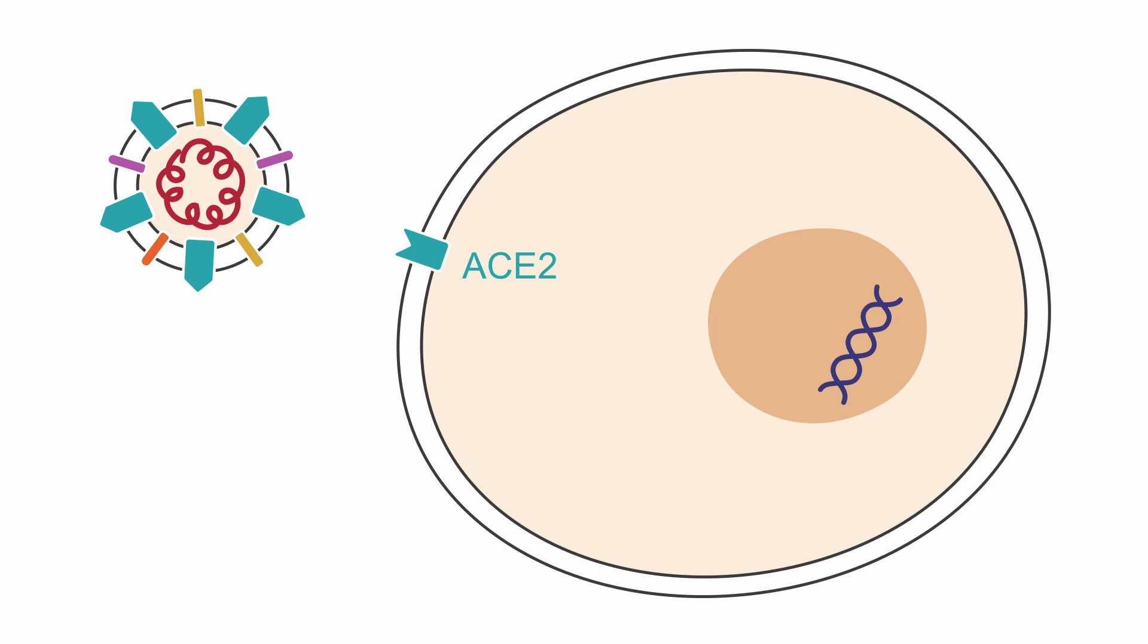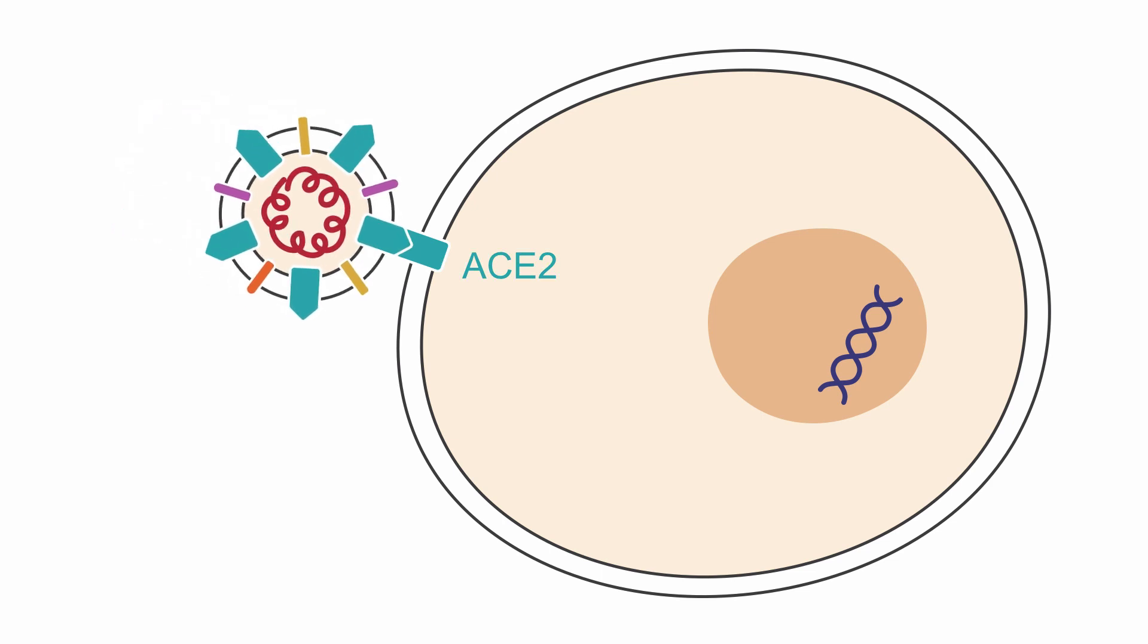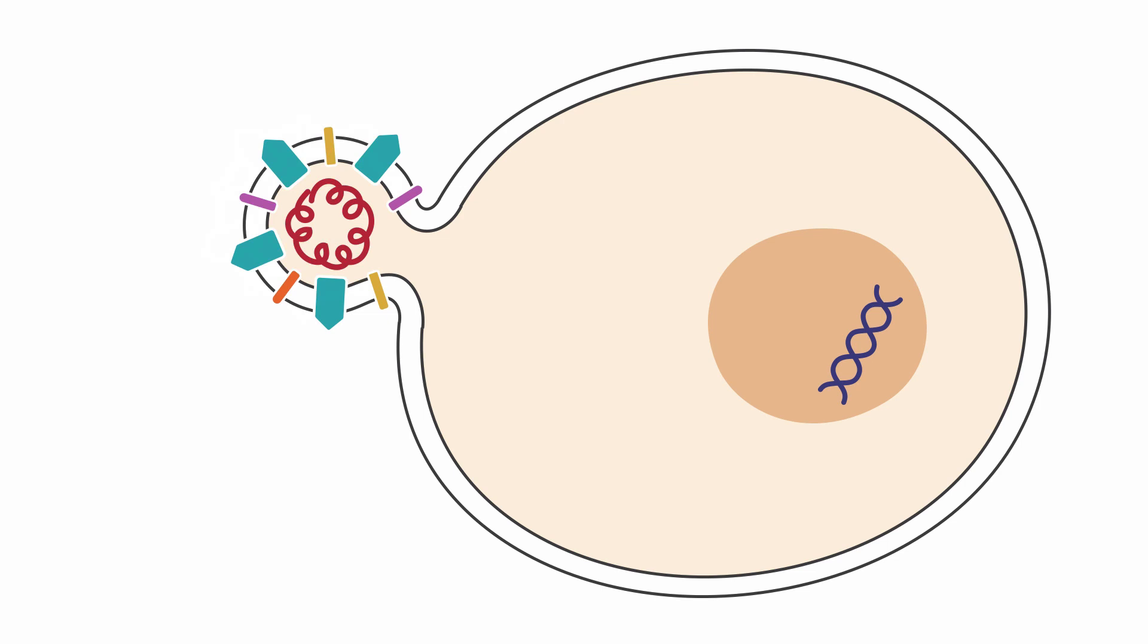Proteins present on the surface of the virus known as S protein or spike proteins bind to the ACE2 receptor, allowing the virus to attach and release its RNA into the cell.